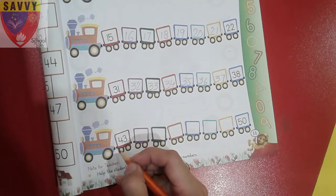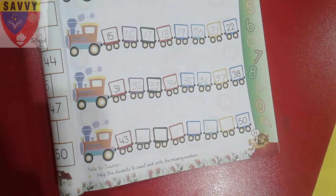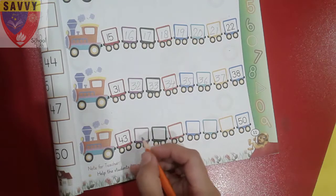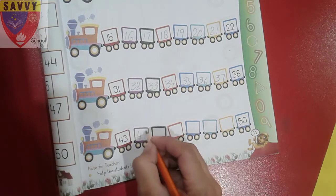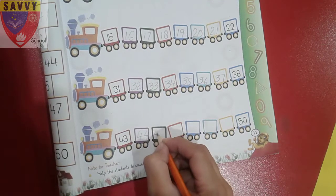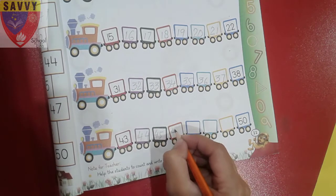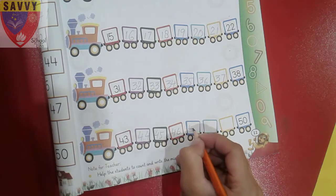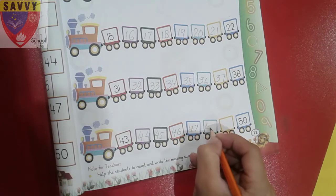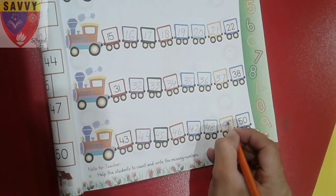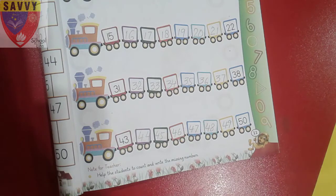And in the last train, we write the missing numbers between forty-three to fifty. So let's start. Forty-three, forty-four, forty-five, forty-six, forty-seven, forty-eight, and forty-nine.